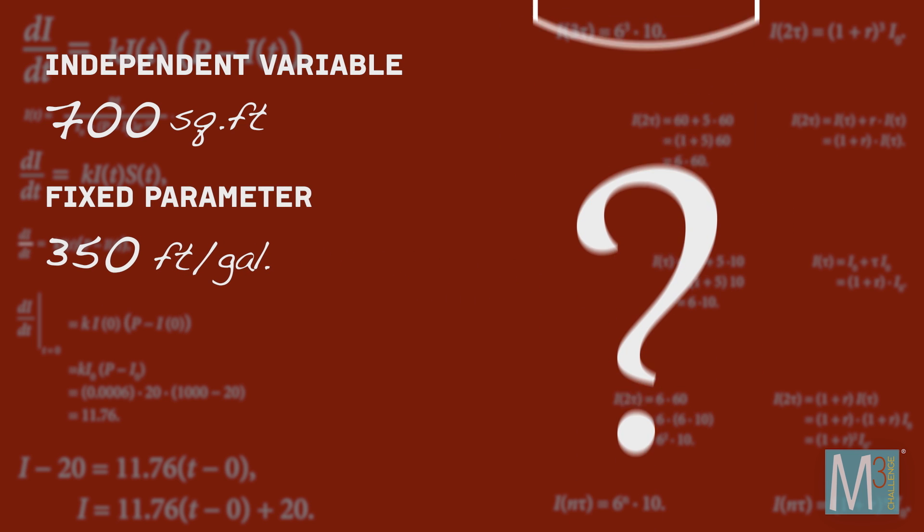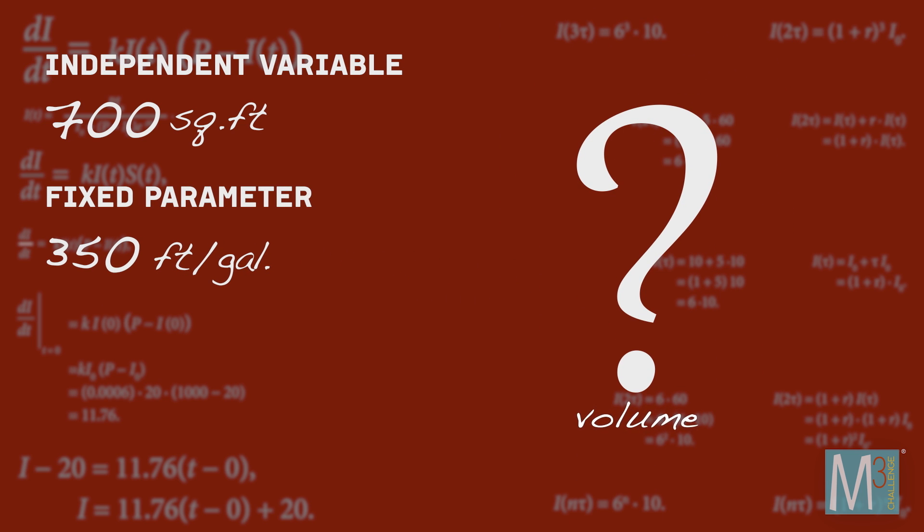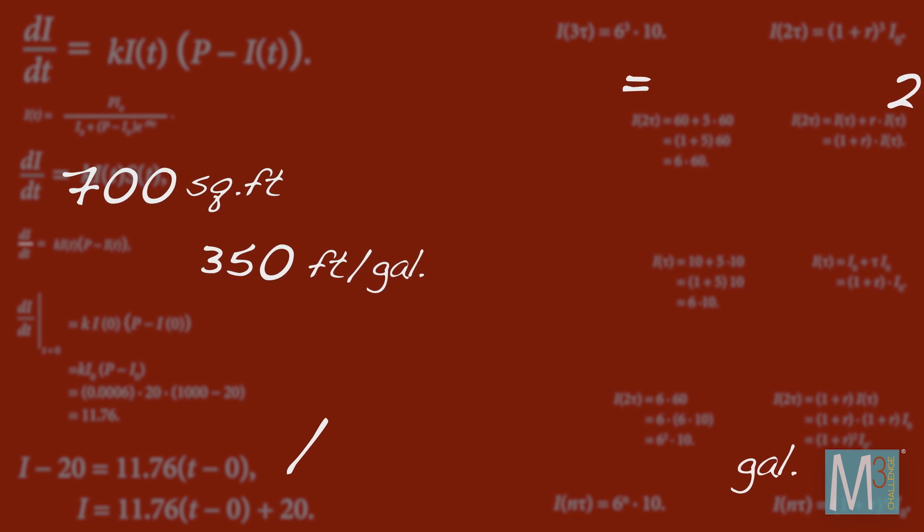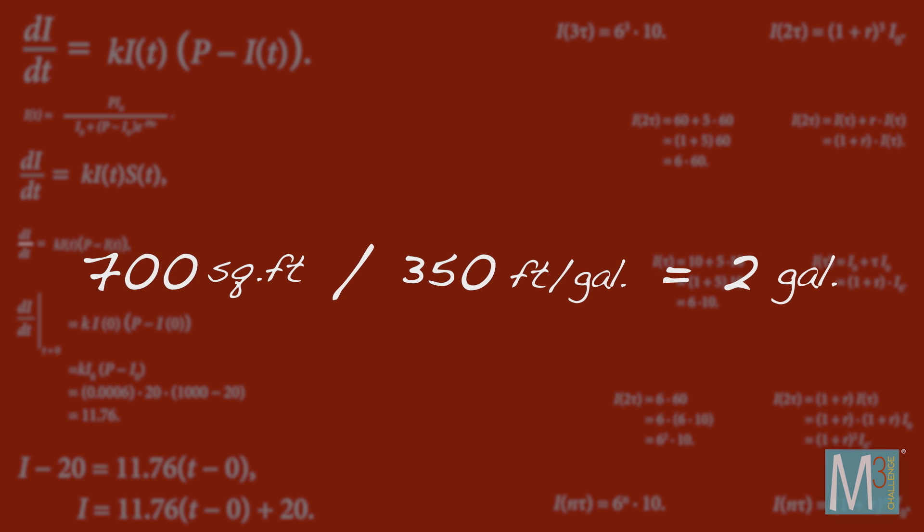The only thing you don't know is the volume of paint you'll need. So that's the dependent variable or output you seek. Once you've figured that out, you're well on your way to finding a solution. In this case, buy two gallons of paint.